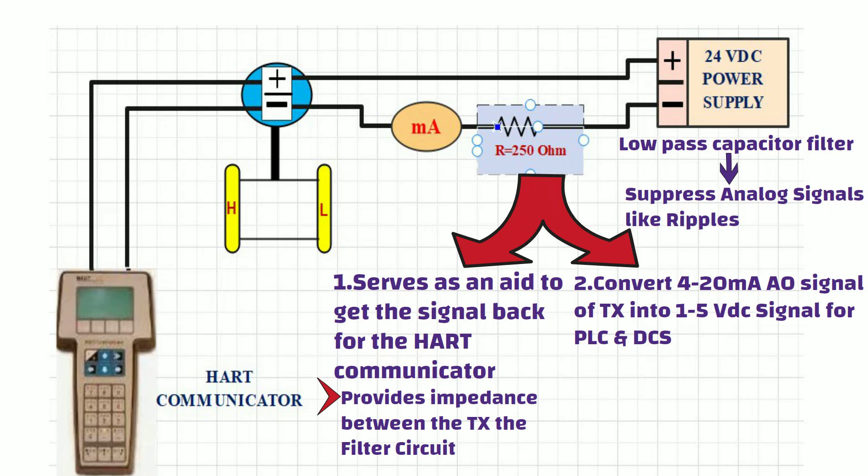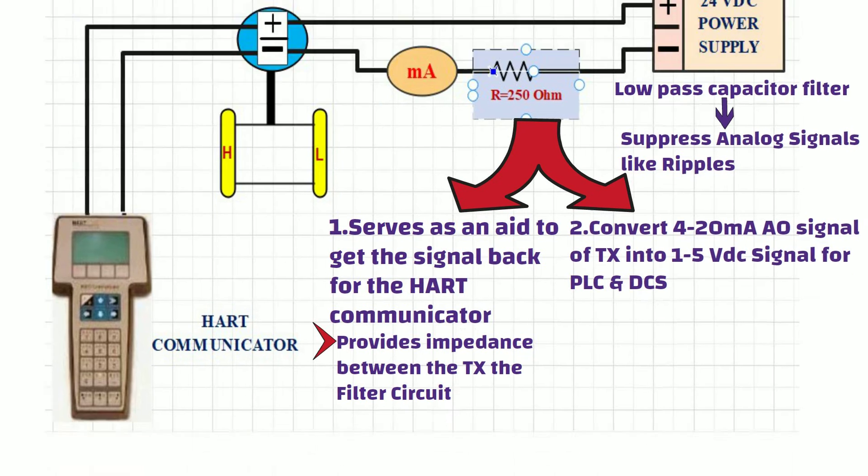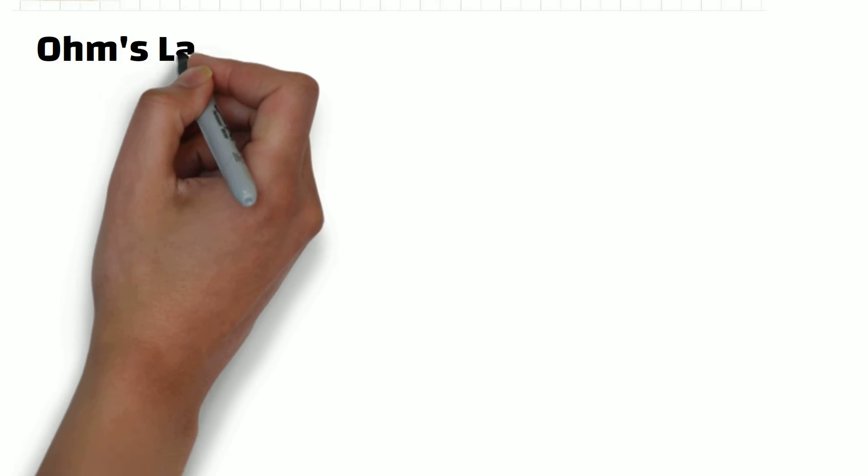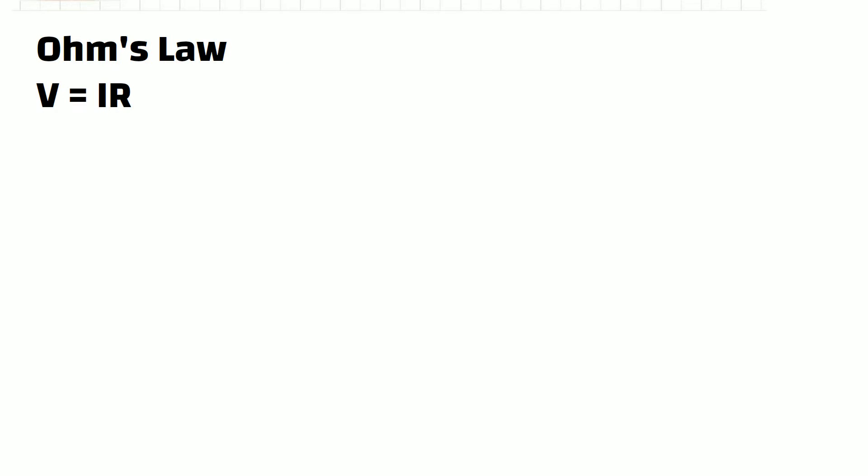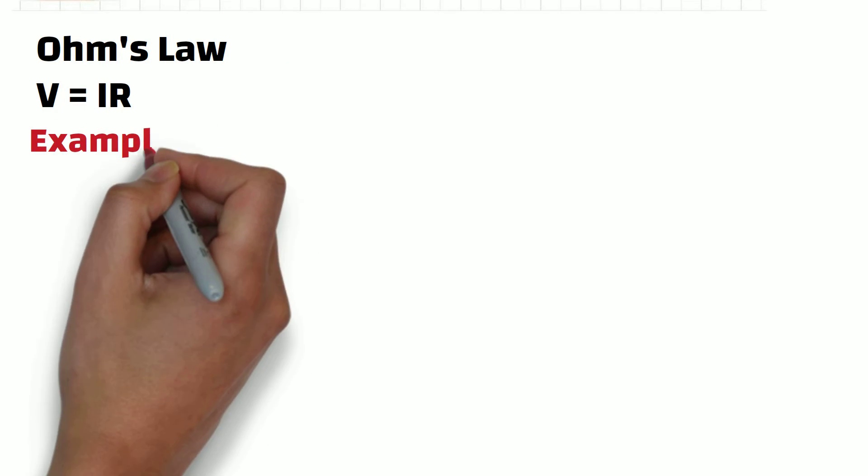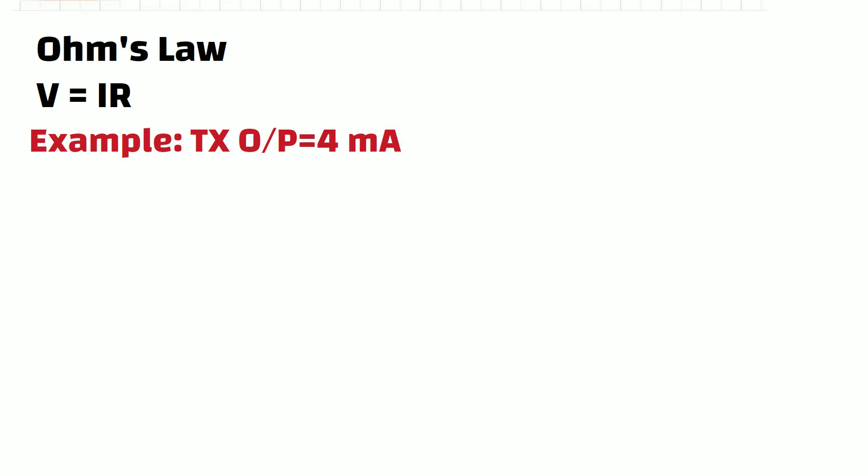Let me explain you this thing by taking Ohm's law examples. As you can see, this is the equation of Ohm's law. Let's assume that transmitter's output is 4 mA, and we have 250 ohm resistor in the circuit. Now, put all these values into equation, and do the simple math calculation. You will get 1 volt DC as a result.